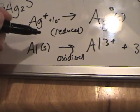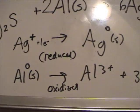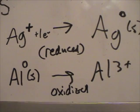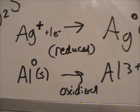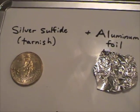So, you went from a zero oxidation state up to a three. Aluminum is oxidized. The silver is reduced. This is a redox reaction between the aluminum foil and silver sulfide.